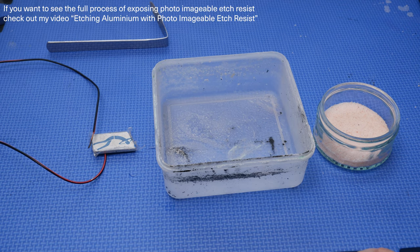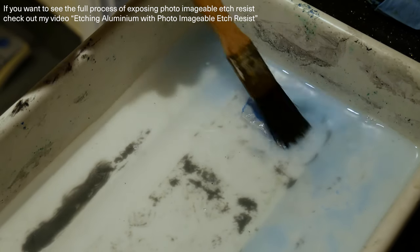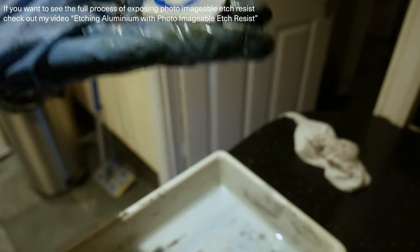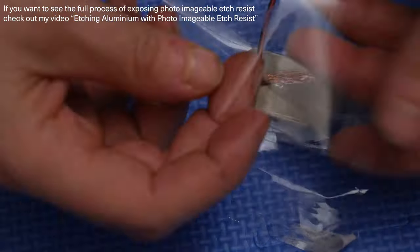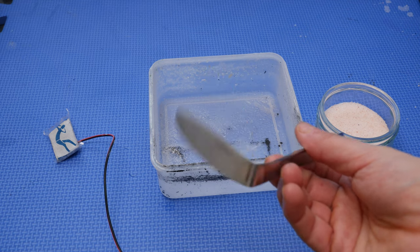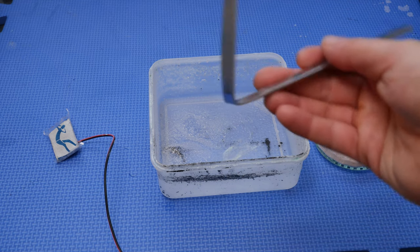So I've kind of fast forwarded the process a little bit today. I've already exposed my image on my aluminum plate, which you can see here. I've attached a wire to the back of it. I've got a piece of stainless steel, which is what you need to do the electro etching with aluminum.